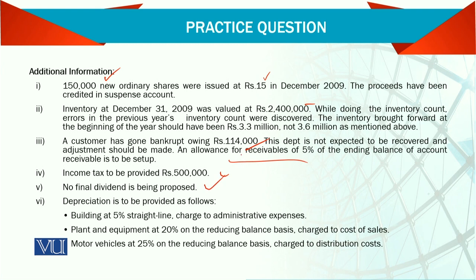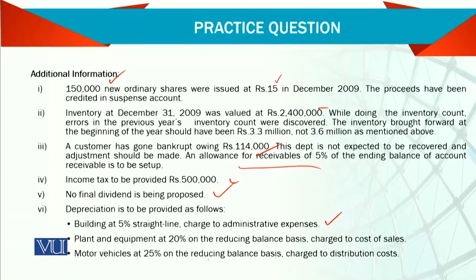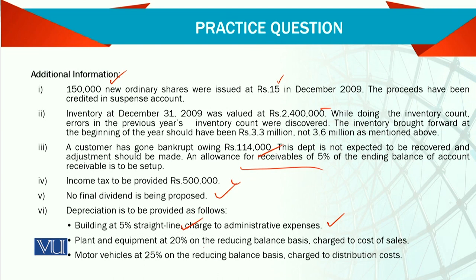Final dividend — no final dividend is proposed. If in case the company declares any proposed dividend, it will not be reported in the statement of change in equity because it is not yet paid; it should be reported in the notes to the accounts. Depreciation is to be provided: 5% straight-line on building charged to administrative expense. Plant and equipment at 20% reducing balance method, and motor vehicle at 25% reducing balance method. Be careful about which method applies to each asset.